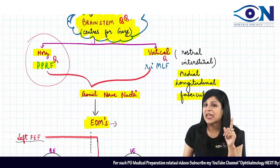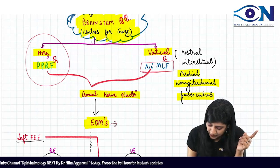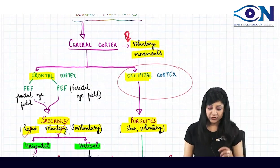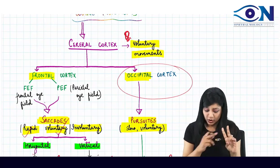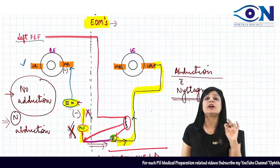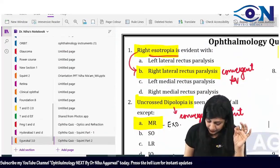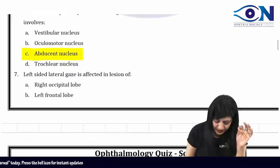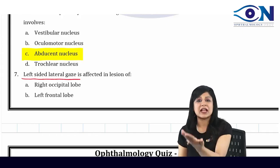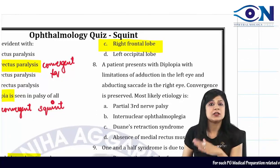For horizontal gaze, we have the PPRF controlling at the level of the sixth nerve nucleus. For vertical gaze, we have the rostral interstitial medial longitudinal fasciculus (riMLF). Now, lateral gaze is affected from the lobe of the other side — so for left-sided lateral gaze, the answer to the question will be your right frontal lobe.